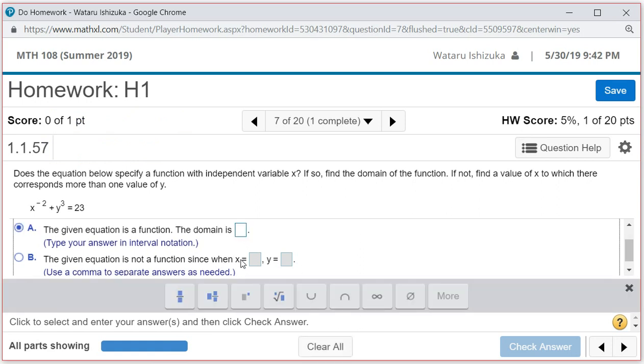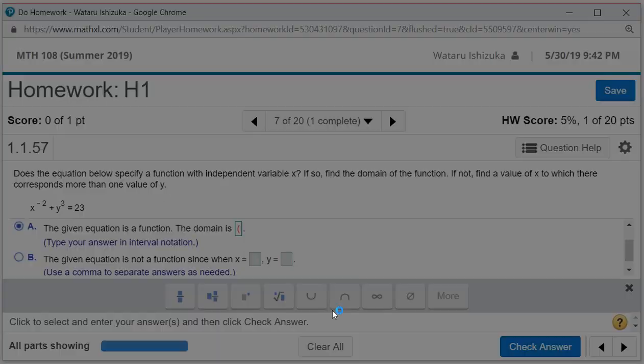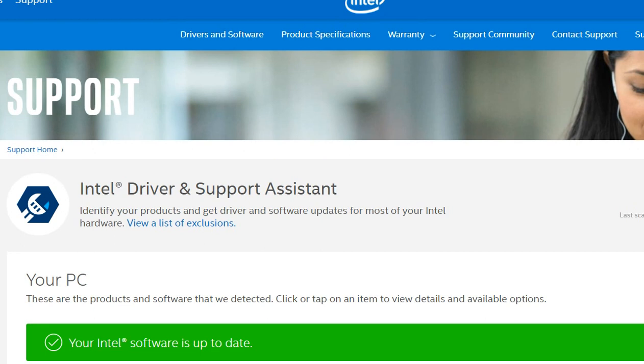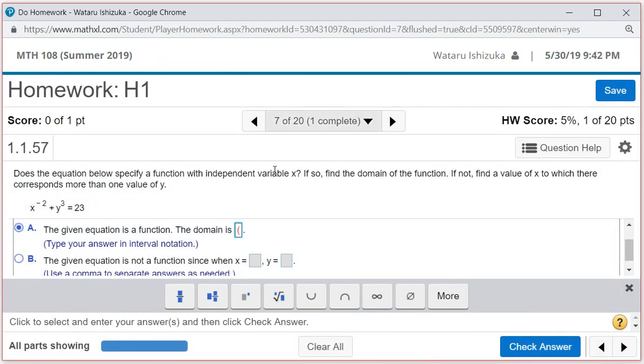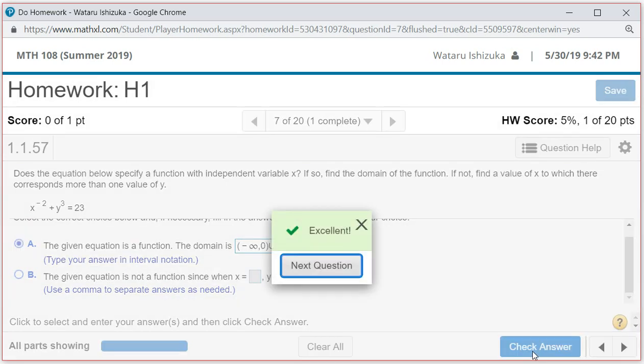All right, so the domain is going to be negative infinity to zero, and then you have to skip that, so skip zero, then all the way to positive infinity. So let's check the answer. All right, got that.